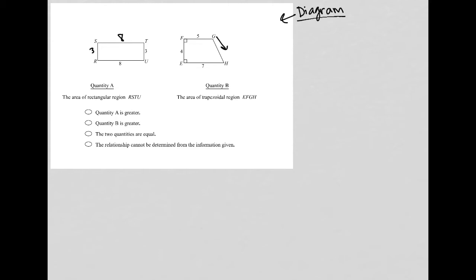So quantity A says the area of rectangular region RSTU. Well, how do we find the area of a rectangle? It's just length times width. You could also call it base times height, which means quantity A is 8 times 3, which is 24.